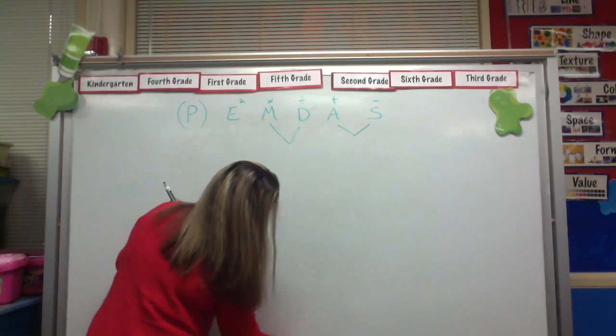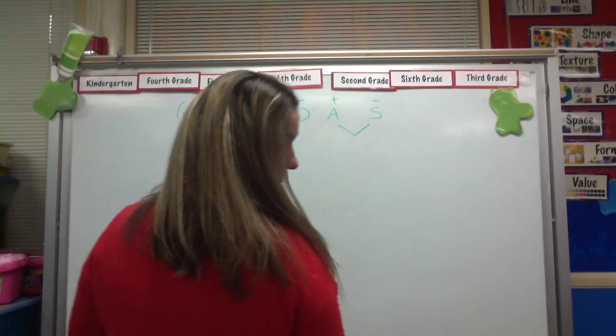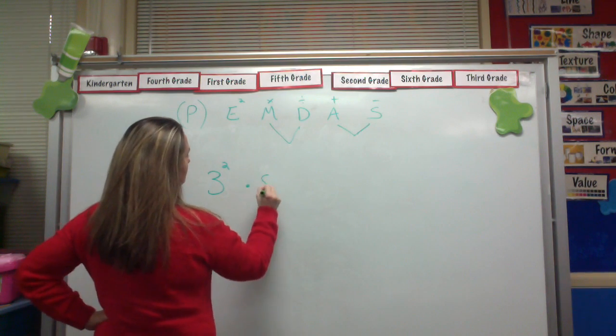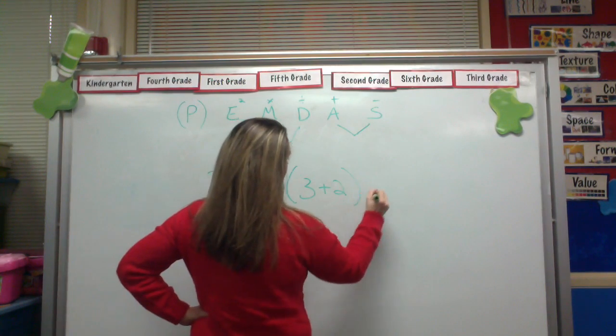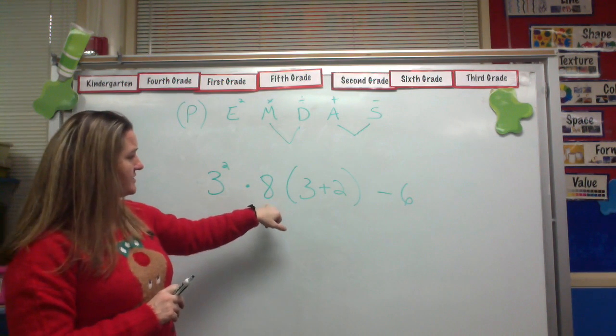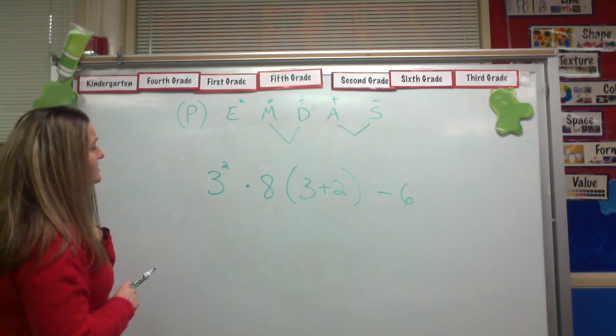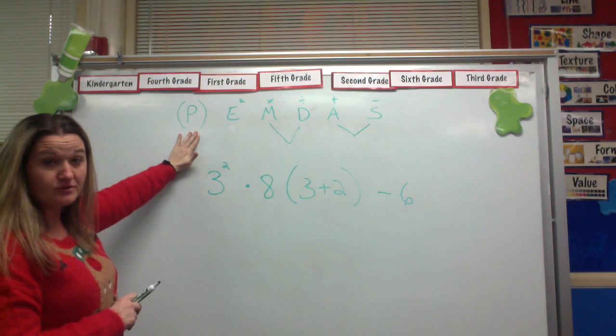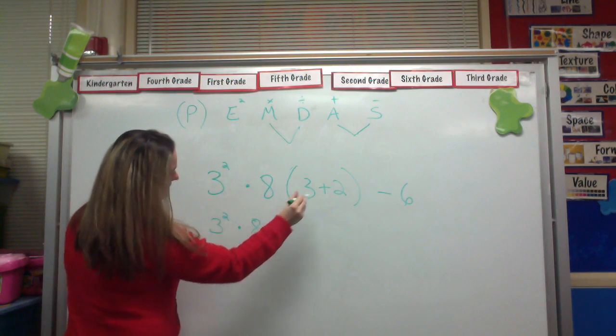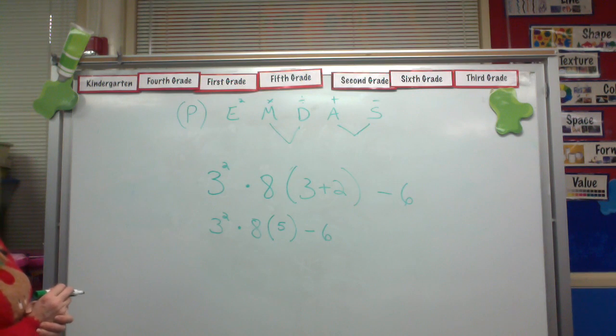All right, let's do one more. All right, so we've got 3 squared times 8 times 3 plus 2 minus 6. Oh, my goodness. All right, so let's go ahead. Let's go ahead and start with the order of operations. What do I do first? Parentheses. So I'm going to rewrite this with this part being done. So I do what's in parentheses. In this case, it's 3 plus 2 is 5 minus 6. So I've rewritten that.